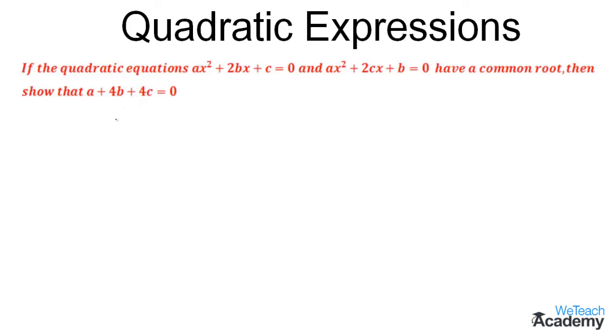So the condition for two quadratic equations to have a common root is (c₁a₂ - a₁c₂)² = (a₁b₂ - a₂b₁)(b₁c₂ - b₂c₁).